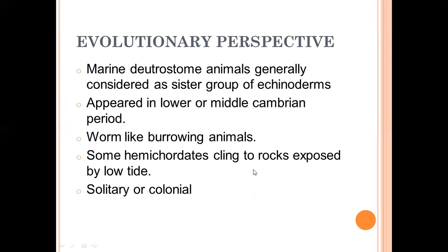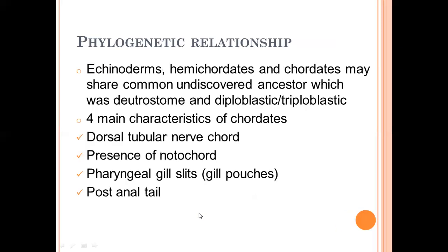Some hemichordates cling to rocks and they are solitary or colonial animals. Then there is the phylogenetic relationship. Echinoderms, hemichordates, and chordates may share a common undiscovered ancestor.